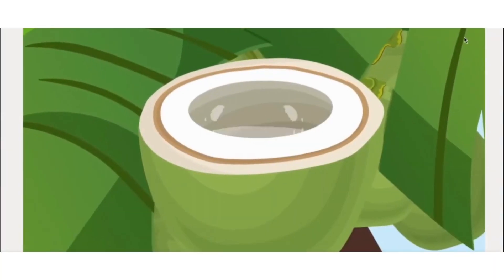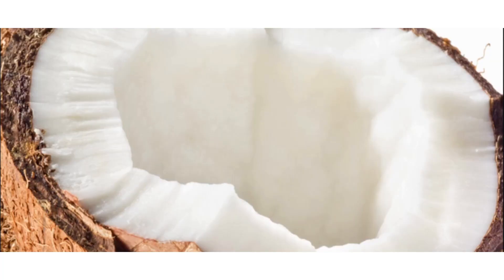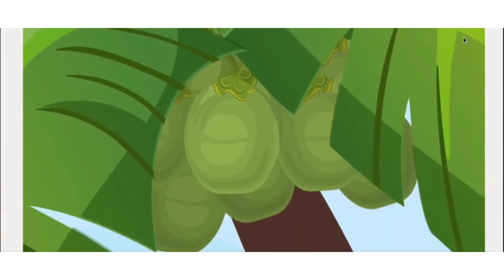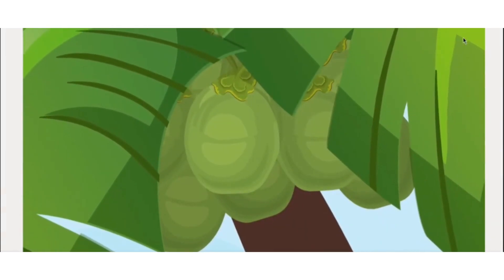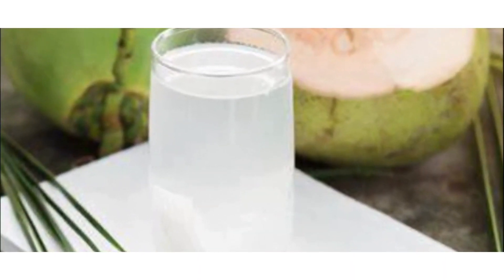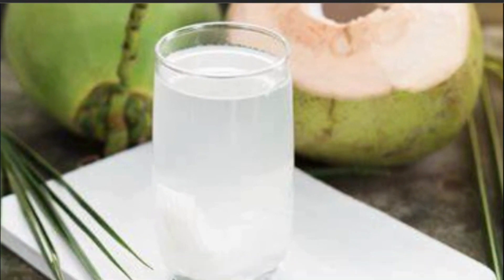The coconut water comes from the other half of the endosperm — half of the endosperm is transformed into the coconut flesh, and the remaining portion stays as the liquid, which is the fresh coconut water that you all see and drink.